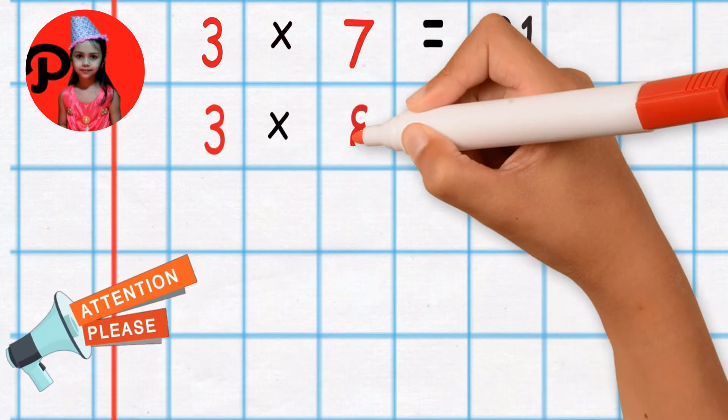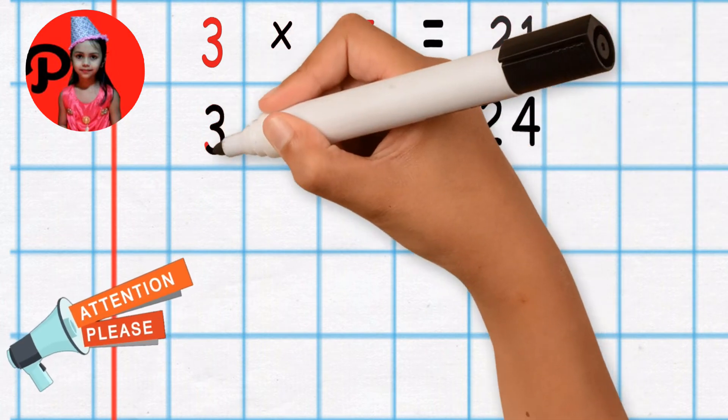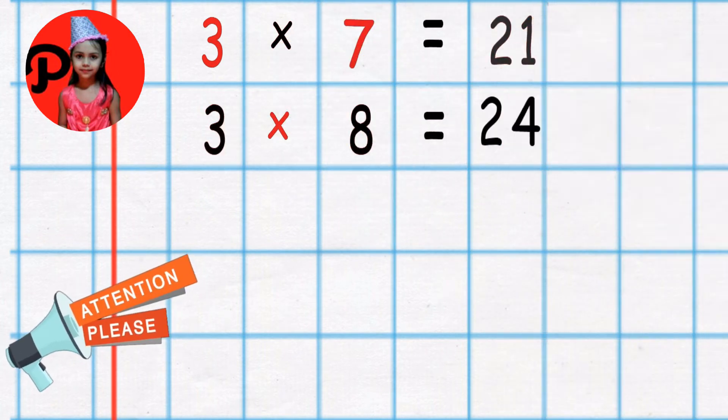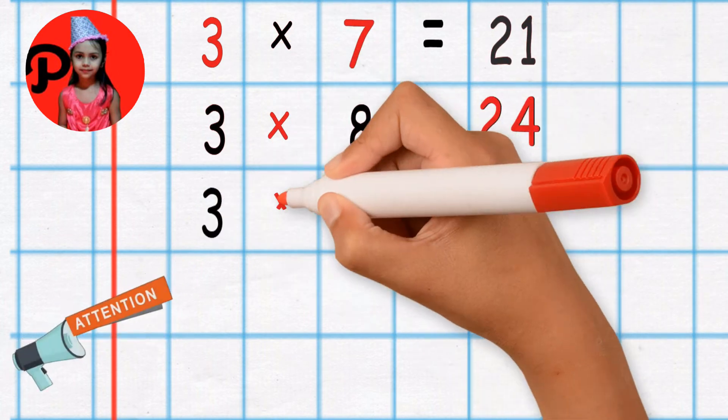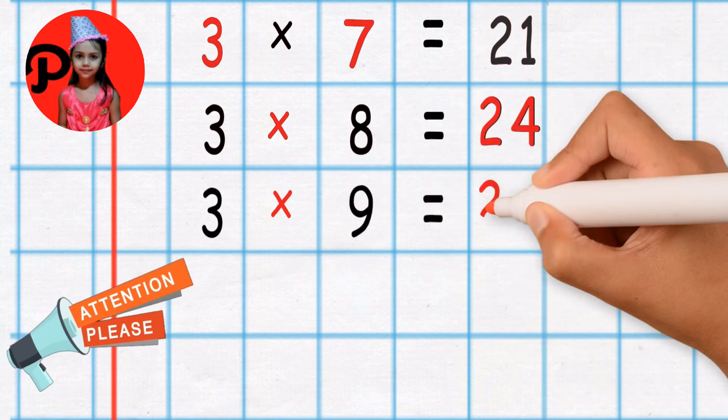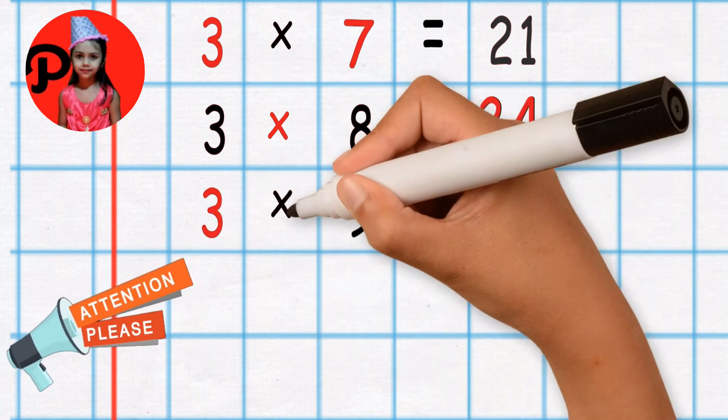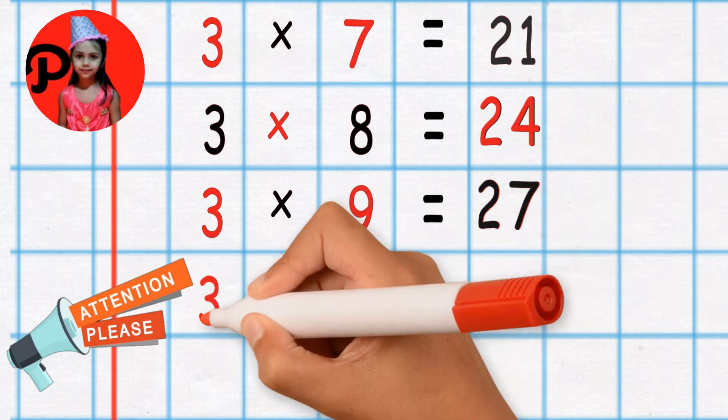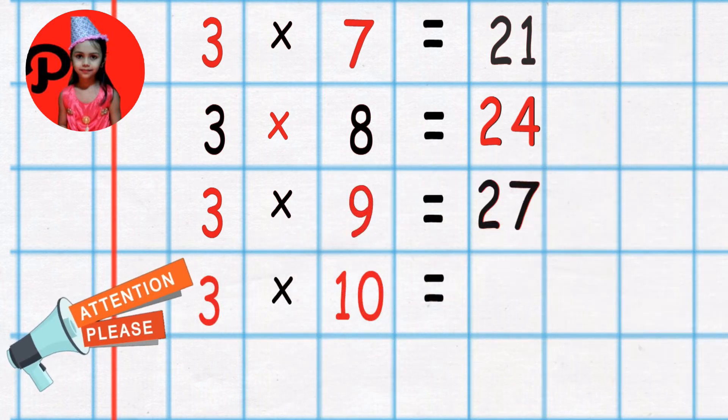3 8's are 24. 3 8's are 24. 3 9's are 27. 3 9's are 27.